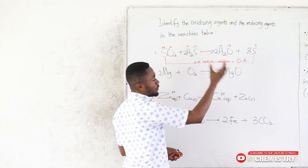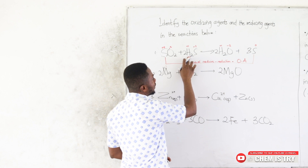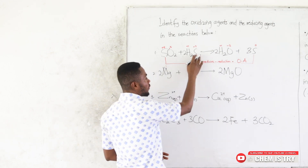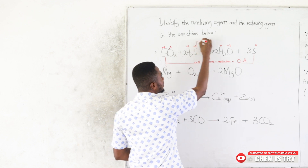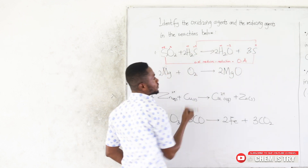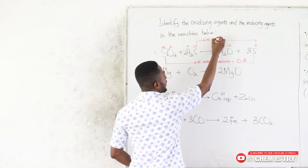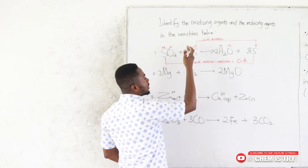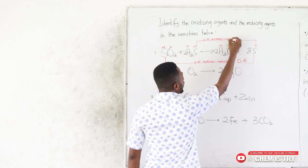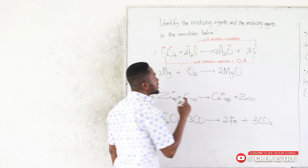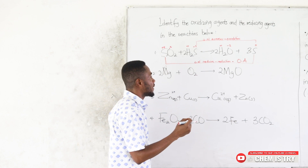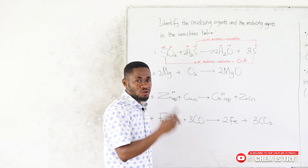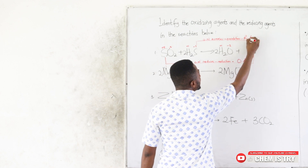Oxygen has the same oxidation number on both sides, so it's not relevant. Hydrogen stays at +1 on both sides — no change. But sulfur in H₂S has an oxidation number of −2 on the reactant side, which increases to 0 on the product side. This increase means H₂S is undergoing oxidation and is therefore the reducing agent.